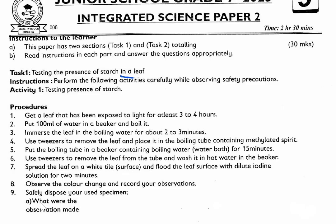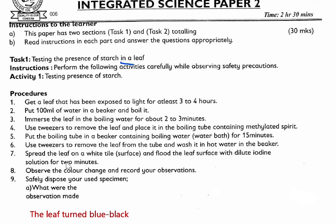The first question asks: what were the observations made? Because this leaf has been exposed to light for at least 3 to 4 hours, when you test using iodine solution, you are going to see that the leaf turns blue-black, indicating the presence of starch. The reason is because this leaf is exposed to light, and light is a condition necessary for photosynthesis, and therefore the leaf will turn blue-black.